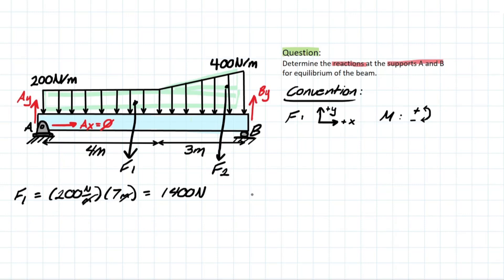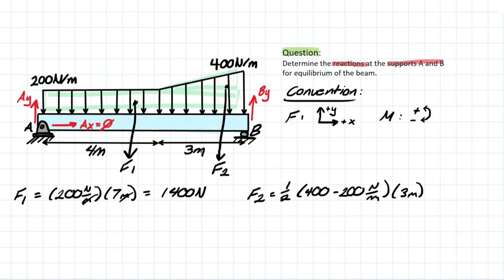For F2, we use one-half because we're working with a triangular distribution. We have the difference between the two elevations of the distributed loads, multiplied by the span it covers, which is 3 meters. This equals 300 N.